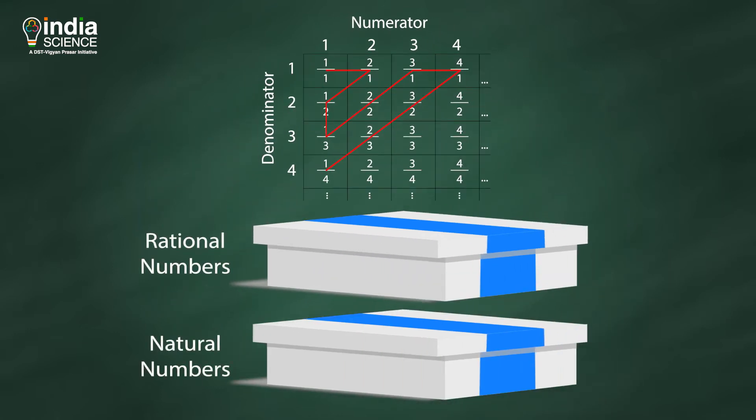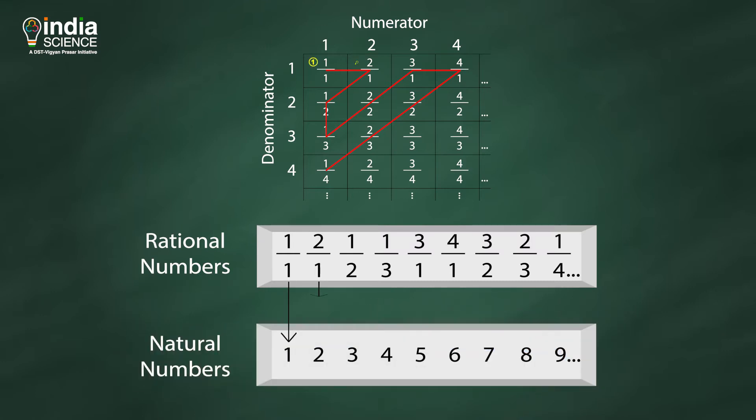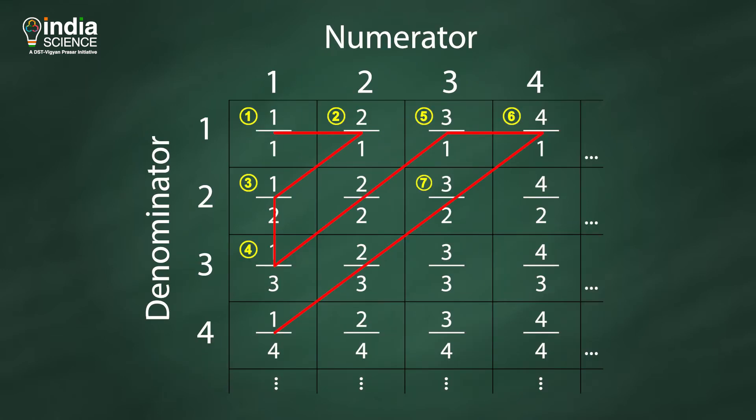And now, we pair each natural number with a positive rational number. For example, 1 by 1 is paired with 1, 2 by 1 is paired with 2, 1 by 2 is paired with 3, and so on. And we can say that the two infinities are equal.